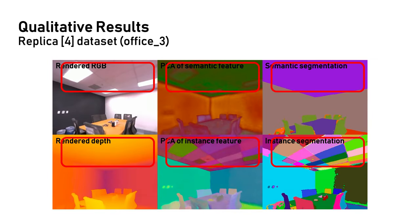Since we use SAM to pre-compute masks, our method tends to segment objects into sub-parts. For example, we segment the ceiling into different tiles.